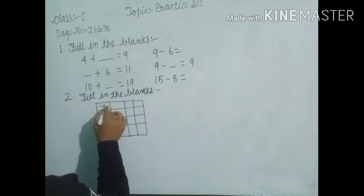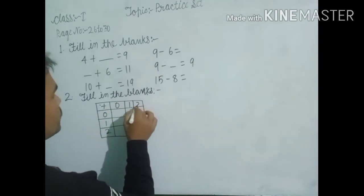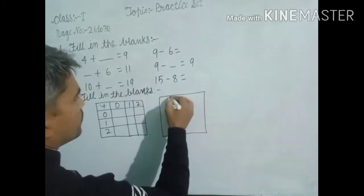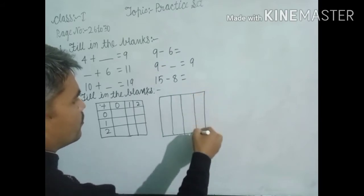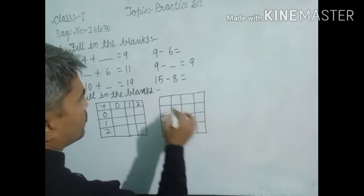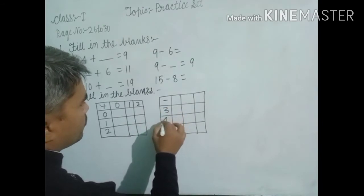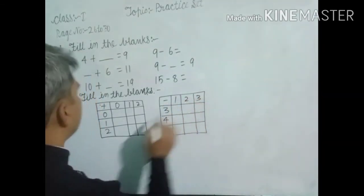Here, plus: 0, 1, 2. And in this side, 0, 1, 2. And another related question here, minus, and 3, 4, 5 in this side and another side, 1, 2, 3. Next.